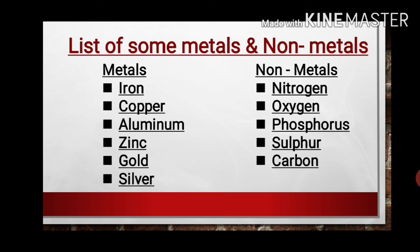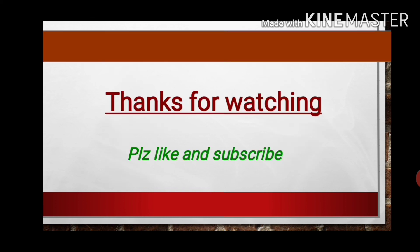Now, here is a list of some metals and non-metals we have discussed. Iron, copper, aluminum, zinc, gold, and silver are examples of metals we usually see in nature. Whereas nitrogen, oxygen, phosphorus, sulfur, and carbon are non-metals we are very familiar with in our surroundings. In the next part of the video, we are going to discuss the chemical properties of metals and non-metals. If you have any doubts, you can comment below.